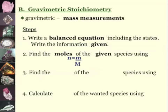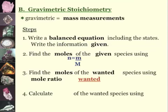Then you're going to find the moles of the wanted species using your mole ratio. I figured out the number of moles that I'm given, so I'm going to multiply that by wanted over given. Then finally, I'm going to calculate the mass of the wanted species using mass is number of moles times molar mass.